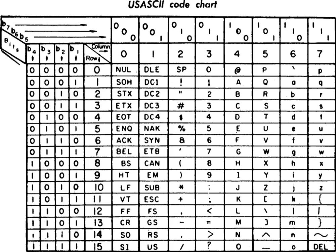In the X3.15 standard, the X3 committee also addressed how ASCII should be transmitted and how it should be recorded on perforated tape. They proposed a 9-track standard for magnetic tape, and attempted to deal with some punched card formats.